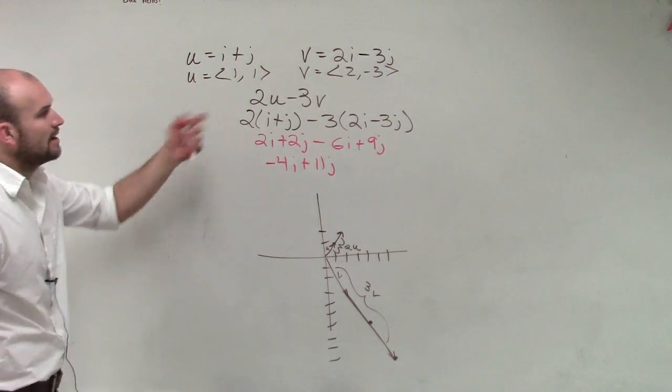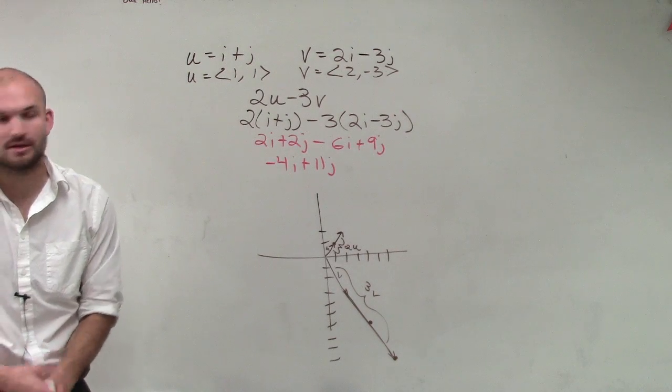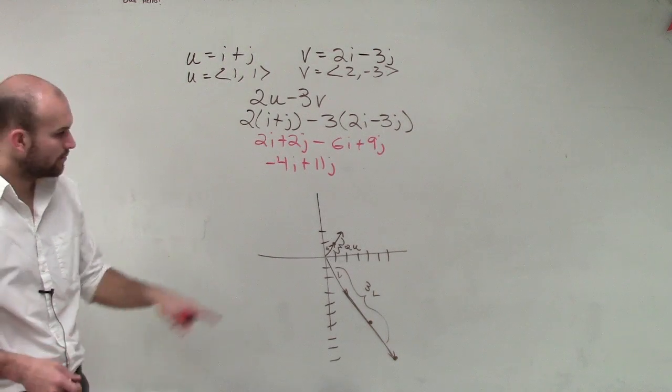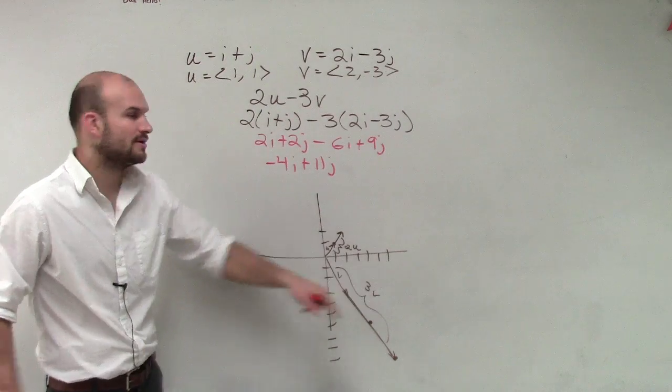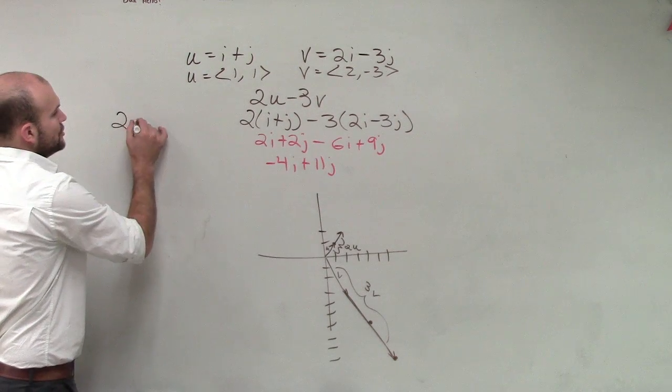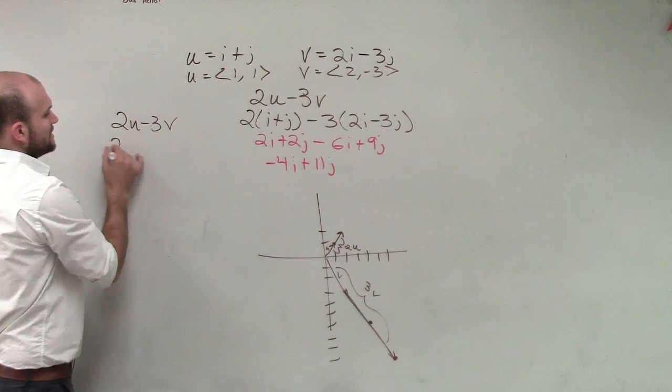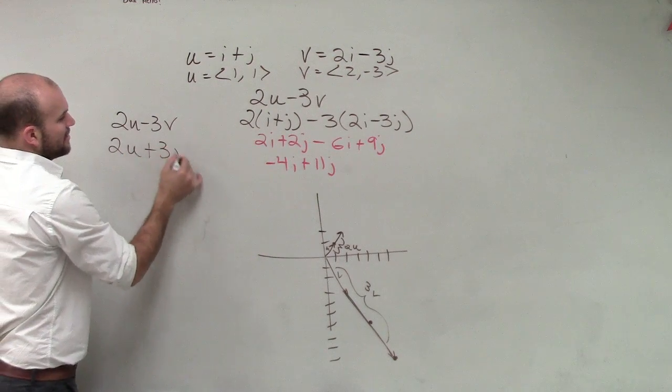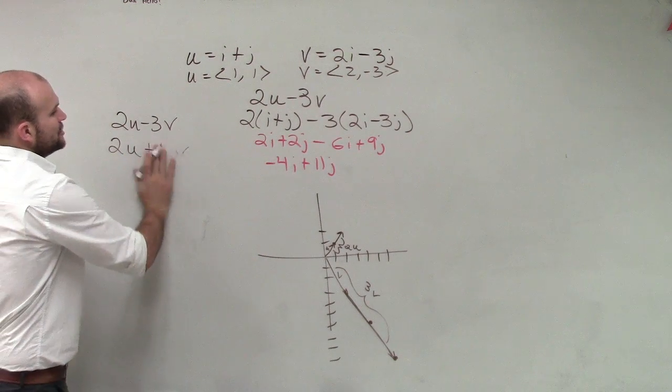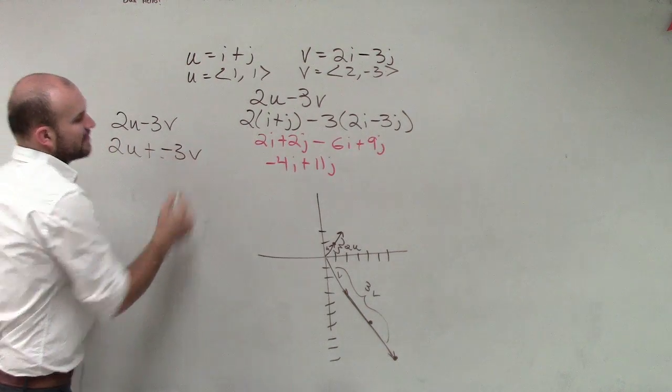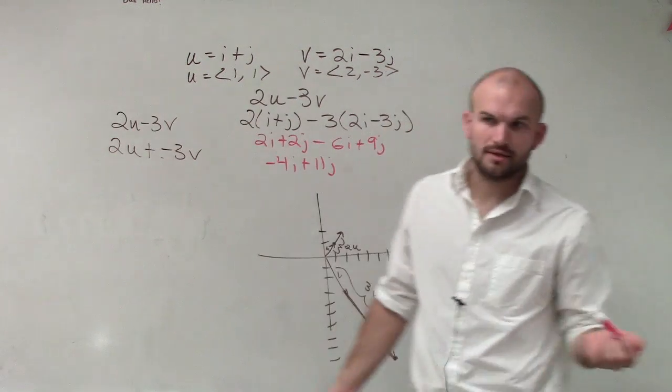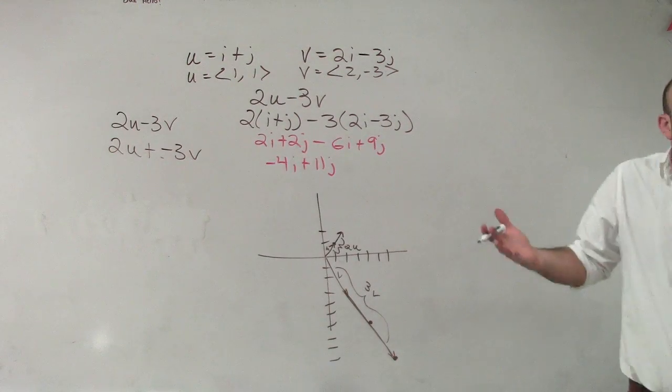Then what they're asking us to do now is 2u minus 3v. Well, the exact same thing, ladies and gentlemen. We're not concerned about, I want to write 2u minus 3v. I would like to write 2u plus a negative 3v. So then how do you do addition?